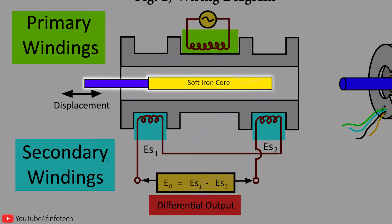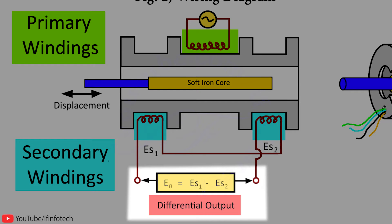When the core is at the center position of the insulating cylinder, magnetic flux linking to coil S1 and S2 has the same value. Therefore, EMF induced in coil S1 and S2 are also equal, so that the differential output measured between two secondary terminals is zero.